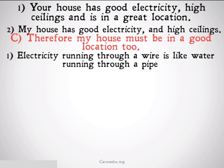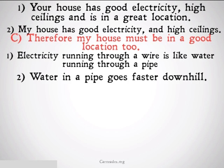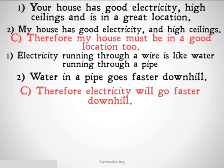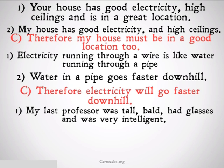Electricity running through a wire is like water running through a pipe. Water in a pipe goes faster downhill. Therefore, electricity will go faster downhill. This commits the fallacy of weak analogy because even though some similarities exist between electricity in a wire and water in a pipe, electricity is not going to be affected by gravity in the same way that water will.